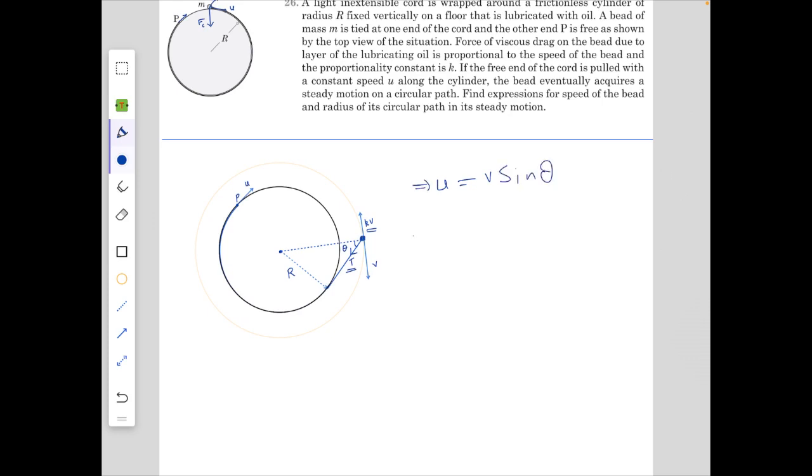Now for the equation for the centripetal force, it can be given as MV square over, now here the radius will be, let's say L, then L sine theta equals R. So L here will be R over sine theta. MV square by R sine theta equals T cos theta.